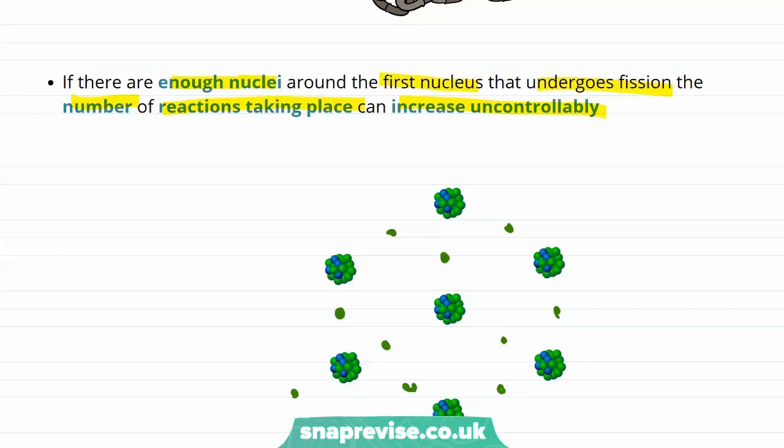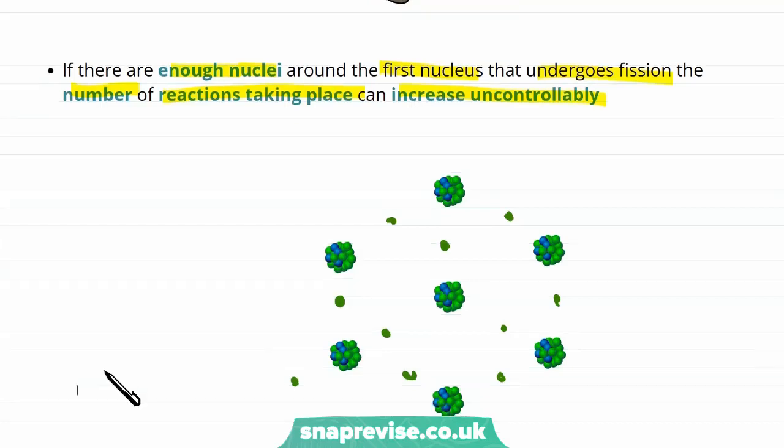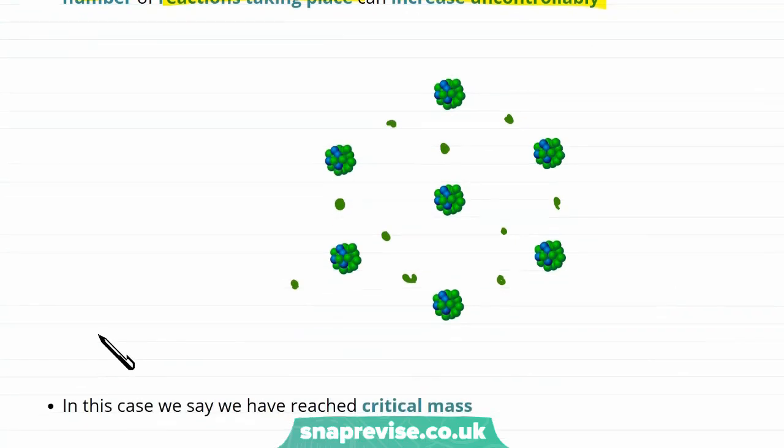This can be dangerous as a large amount of energy could be released. And in this case we say that we have reached what we call critical mass.